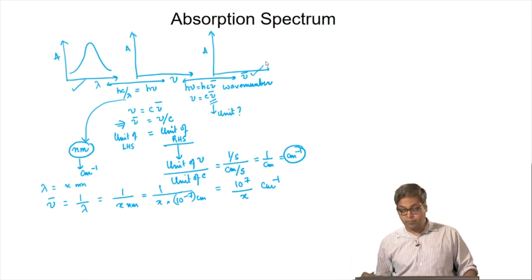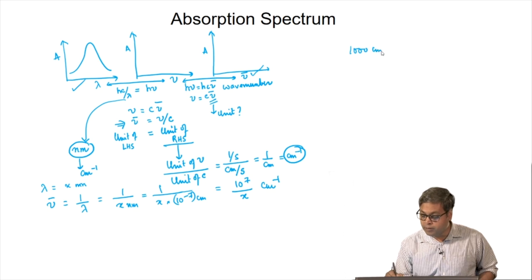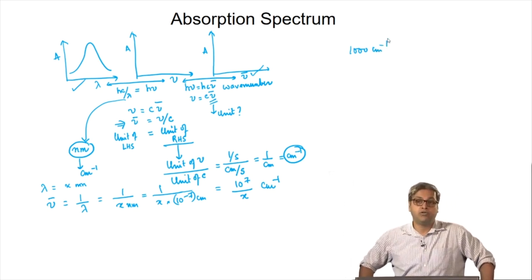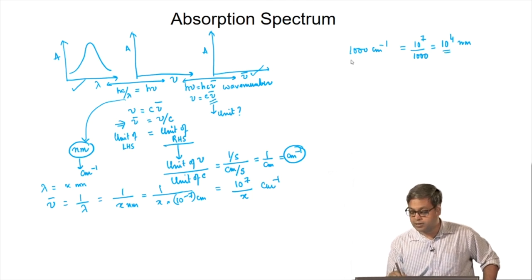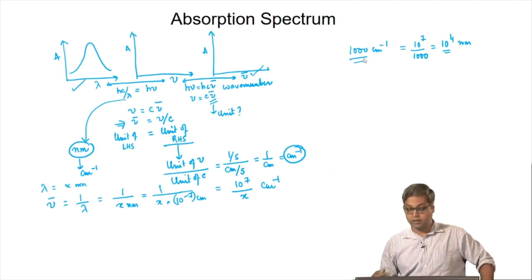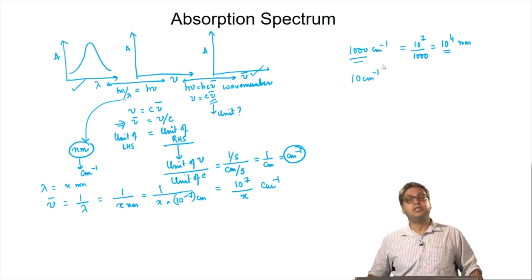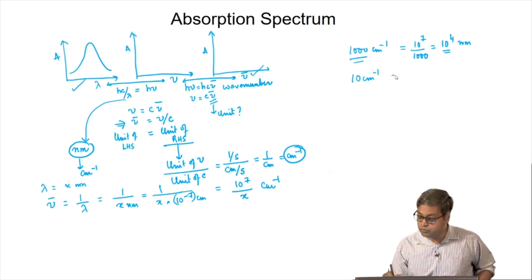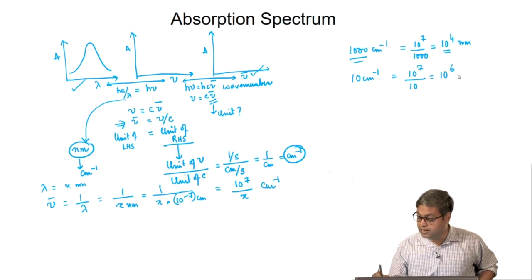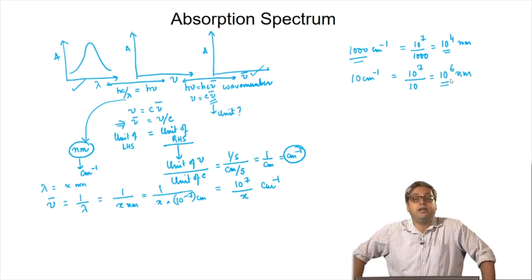For example, 1000 wave numbers is a typical IR frequency. If we convert this into nanometer, it will be 10 to the power 7 by 1000, equals 10 to the power 4 nanometer. So 10 to the power 4 is a larger number than 1000. Similarly, 10 wave numbers is a typical energy gap in a microwave transition, which amounts to 10 to the power 7 divided by 10, that is 10 to the power 6 nanometer — a very very large number.